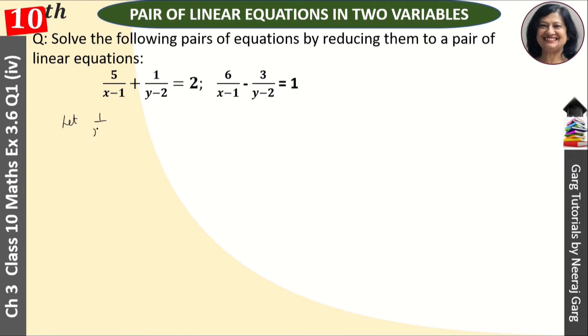We take 1 upon x minus 1 is equal to p and 1 upon y minus 2 is equal to q. Then this becomes 5p plus q that is equal to 2, and this becomes 6p minus 3q is equal to 1. This is our first equation and this is our second equation.